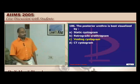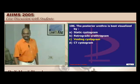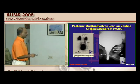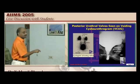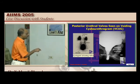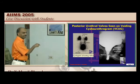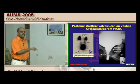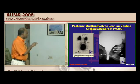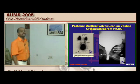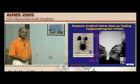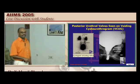The posterior urethra is best visualized by voiding cystourethrogram. This classical example shows a dilated posterior urethra with abnormal posterior urethral valves causing reflux of contrast up to the kidney level. Children with bed wetting and recurrent urinary tract infections should be evaluated for posterior urethral valves — this condition is predominantly seen in males.